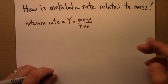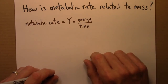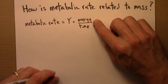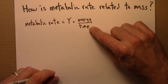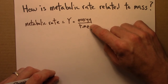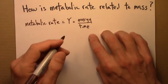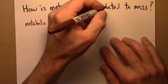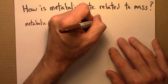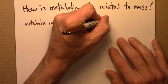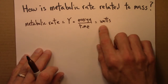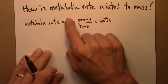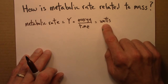The basal metabolic rate is just your resting metabolism — how much you need to eat per day. That would give calories per day. More often though, energy per time in the SI system is watts. So on plots, the units for metabolic rate you'll notice are watts.